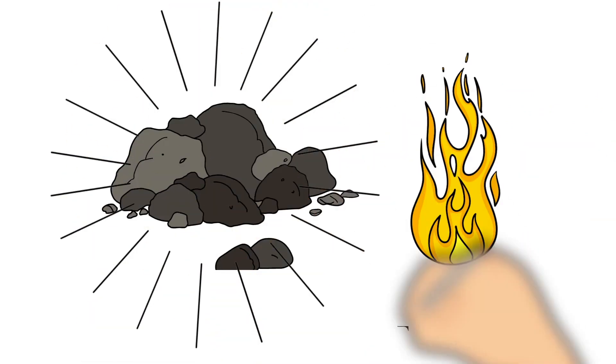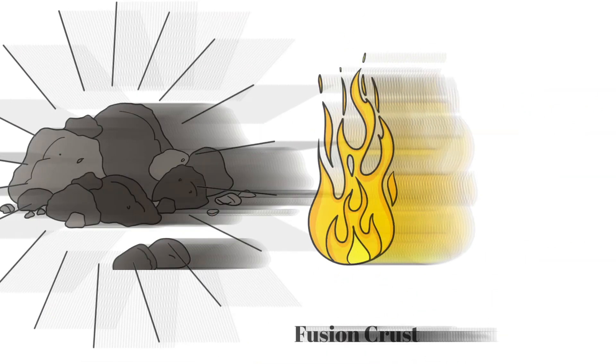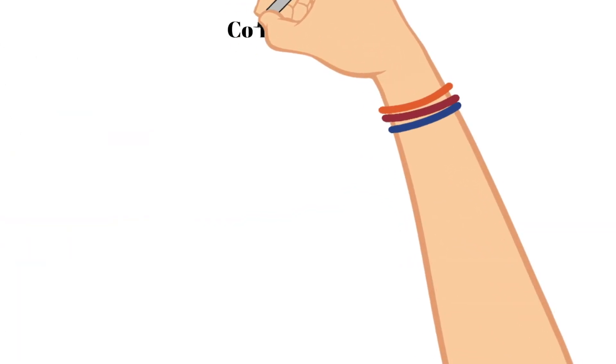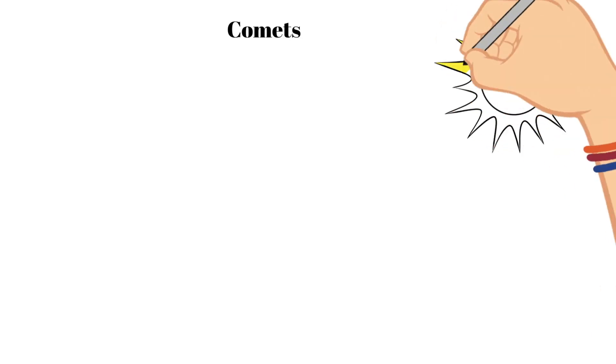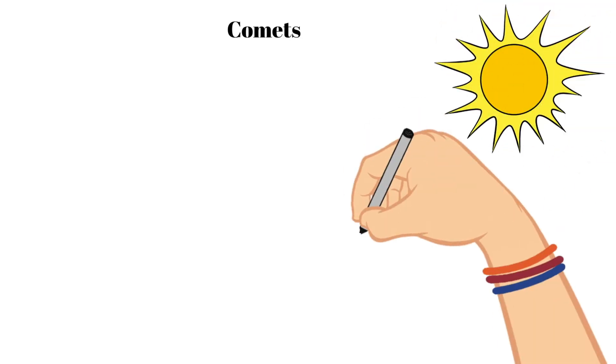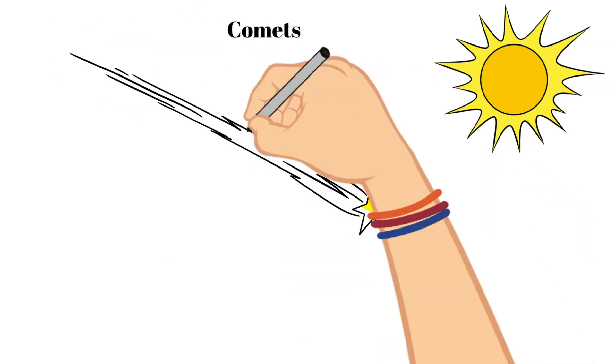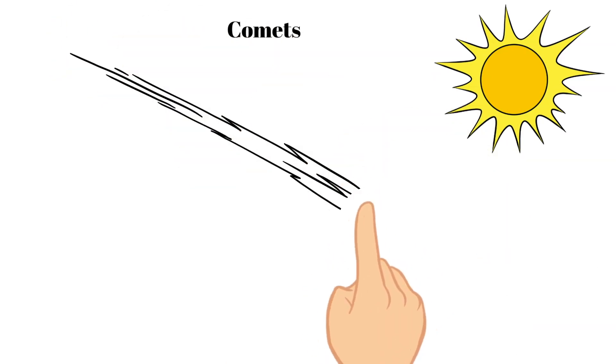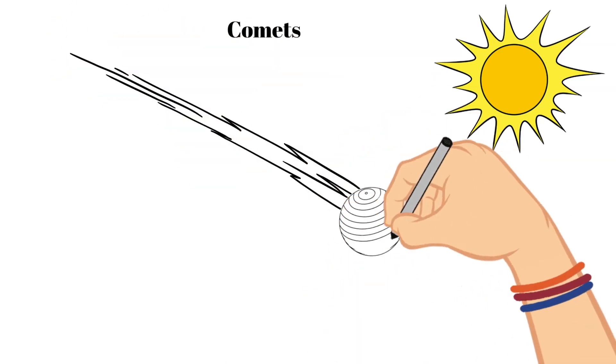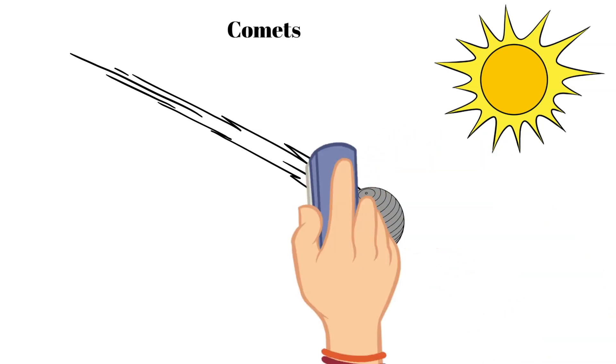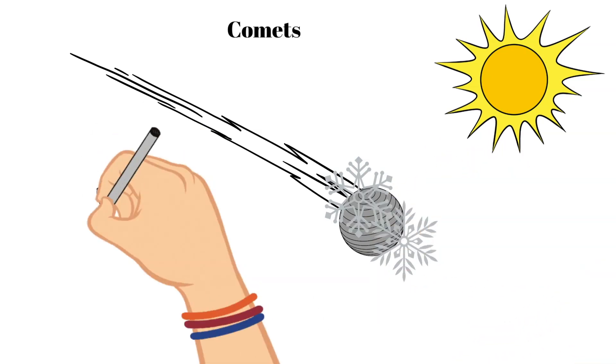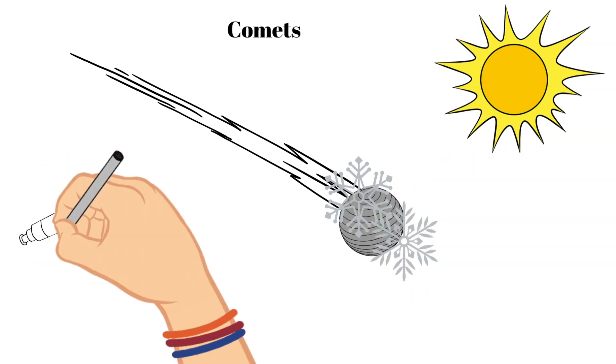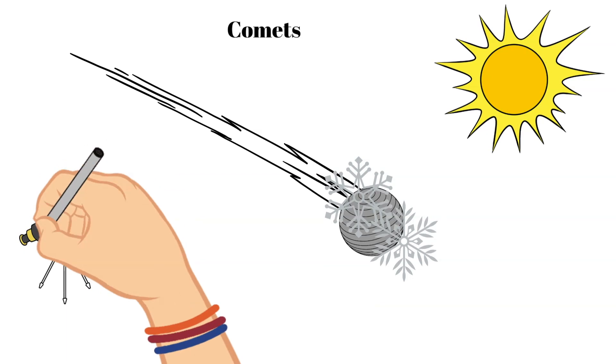The last body that we will look at is a comet. Comets also orbit the sun like asteroids, but unlike asteroids which are rocky, comets are composed of ice and dust. So when a comet approaches the sun, this ice and dust start to vaporize, which creates a type of tail that follows it and can be seen through a telescope.